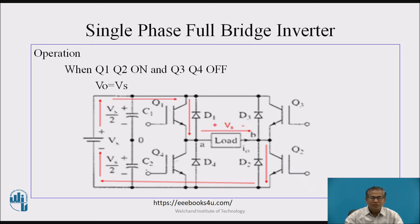The positive half cycle appears across the load. At the same time, Q3 and Q4 are in non-conducting state. Therefore, the voltage drop across Q3 and Q4 is Vs.